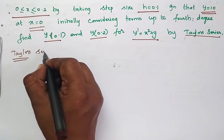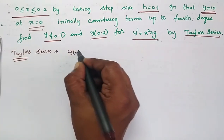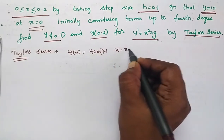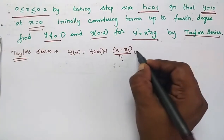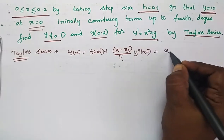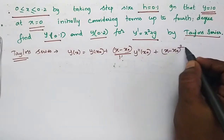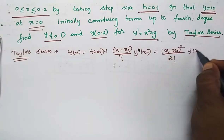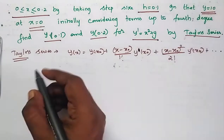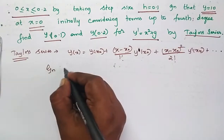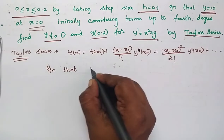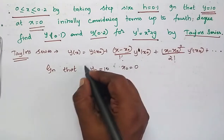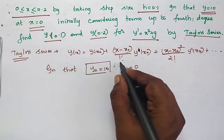The Taylor series formula is: y(x) = y(x₀) + (x - x₀)/1! · y'(x₀) + (x - x₀)²/2! · y''(x₀) + ... Given that y₀ = 10 and x₀ = 0, we substitute these values.